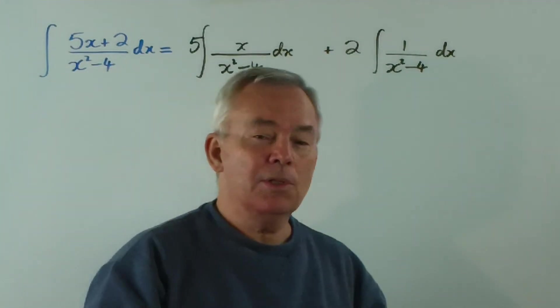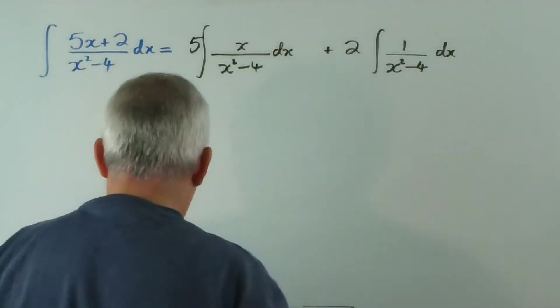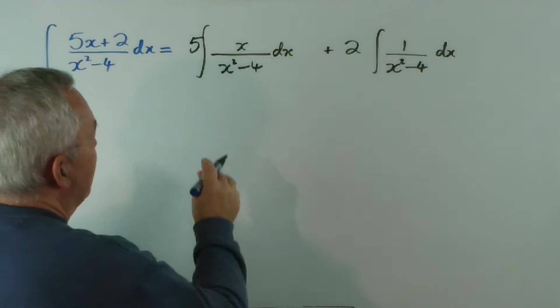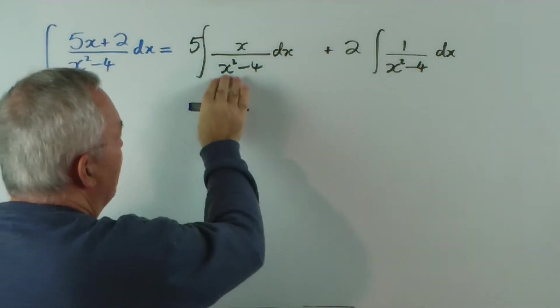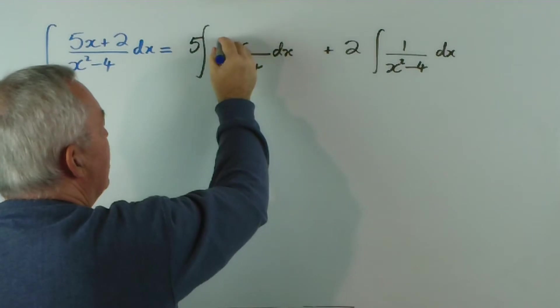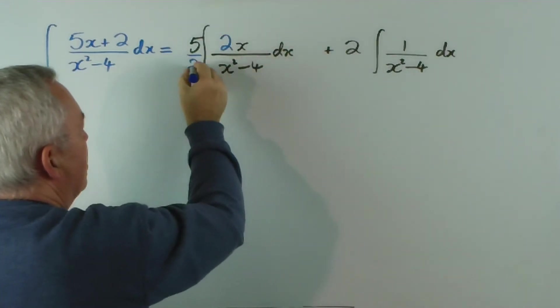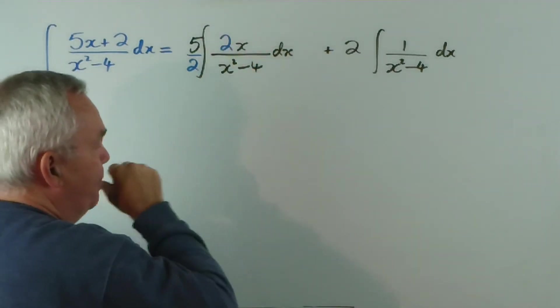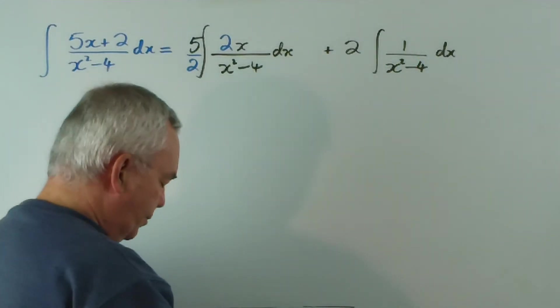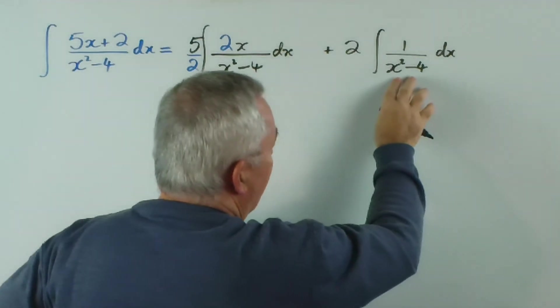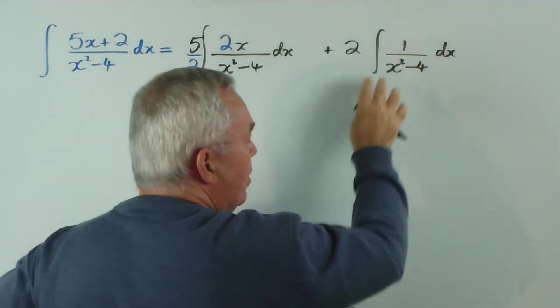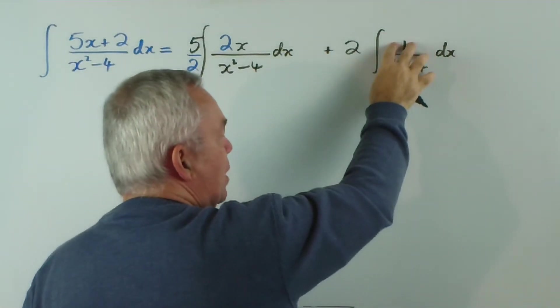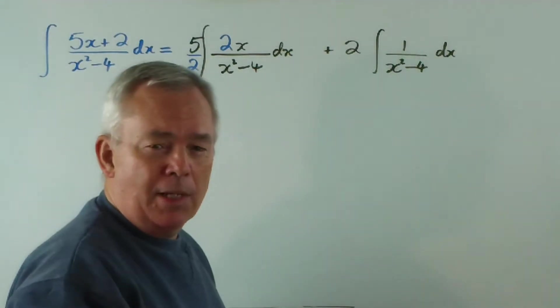So now we have two separate integrals to discuss. This one is very close to a pattern that we're familiar with. What we notice is that if the derivative of this is 2x, a 2x here would be ideal, so let's make that adjustment. That's ready to go. Now, this one over here is slightly more problematic. The derivative of this is 2x. We have no x's at all on the top. And since this is a lower-order polynomial than that, we can deal with this with partial fractions.